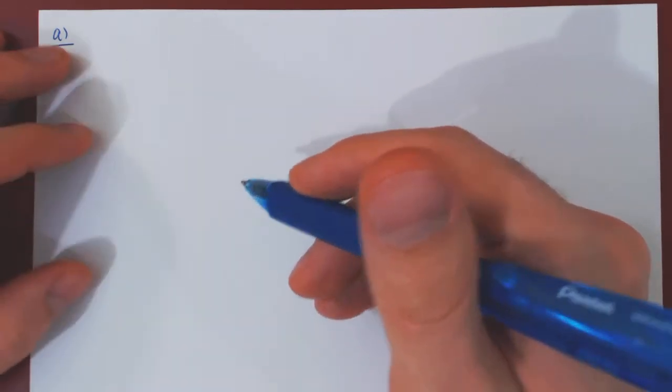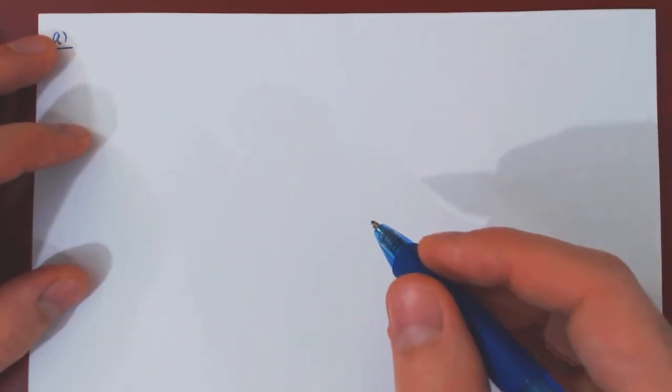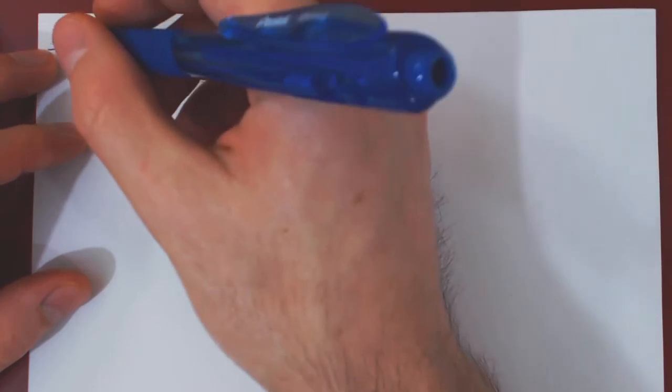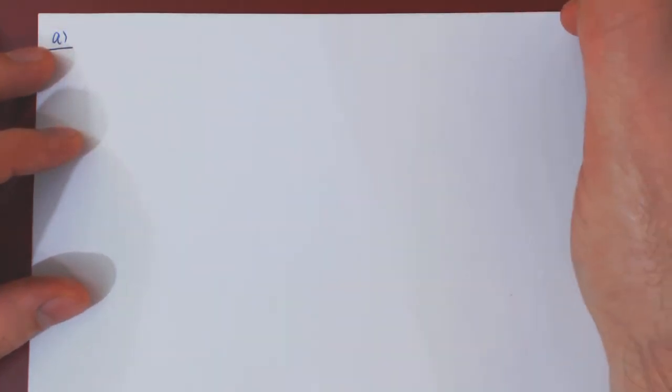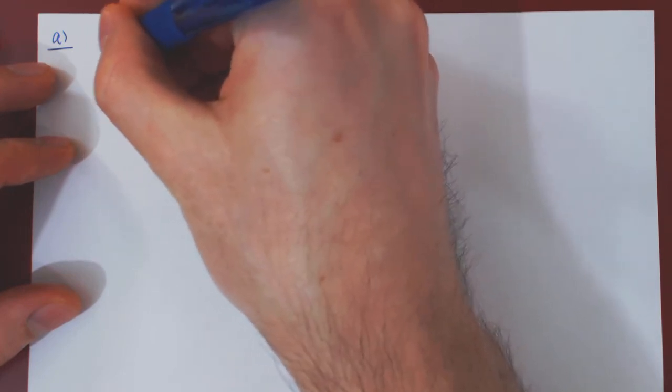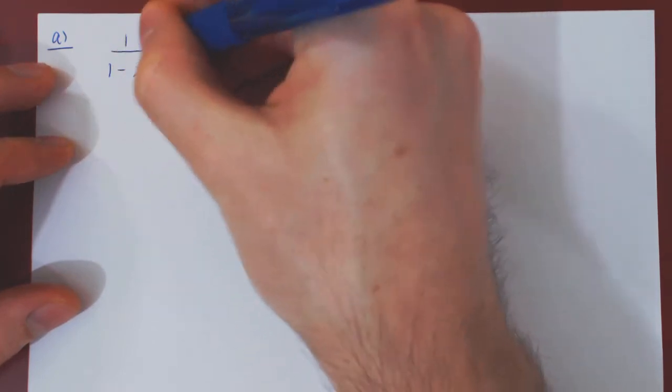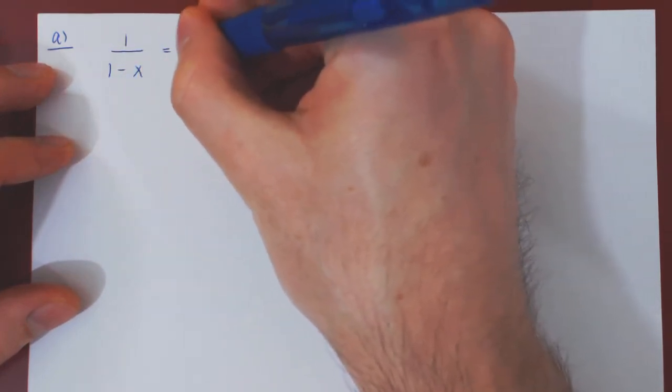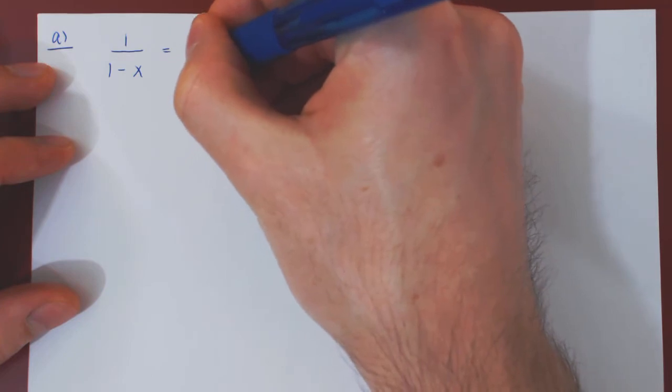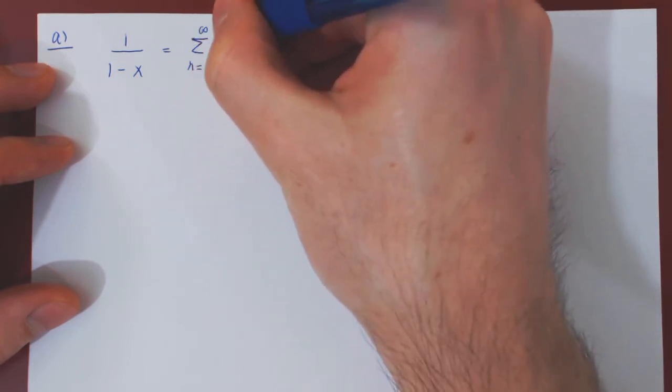In this video we will use term-by-term differentiation of power series to generate, from a known power series, new power series. As a simple example, coming from the summation formula of a geometric series, we have 1 over 1 minus x equal to the series from 0 to infinity of x to the n.